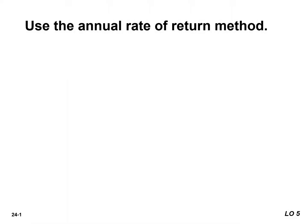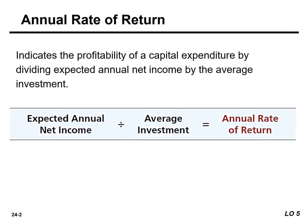The final capital budgeting technique we will look at is the annual rate of return. It is based directly on accrual accounting data rather than on cash flows. It indicates the profitability of a capital expenditure by dividing expected annual net income by the average investment.